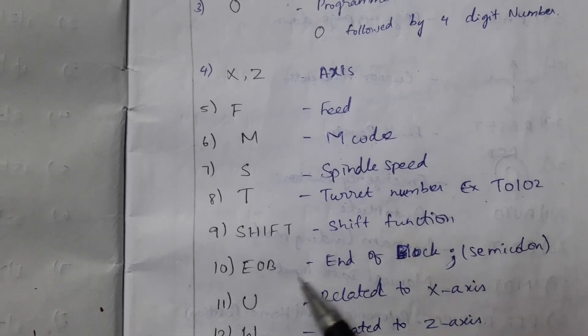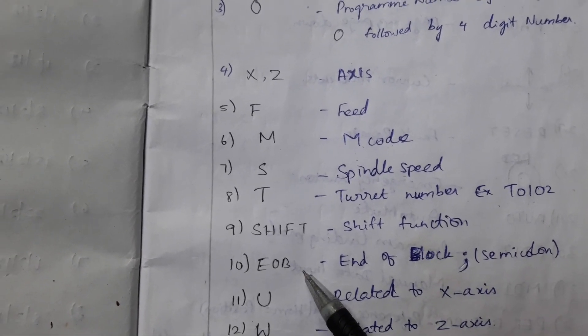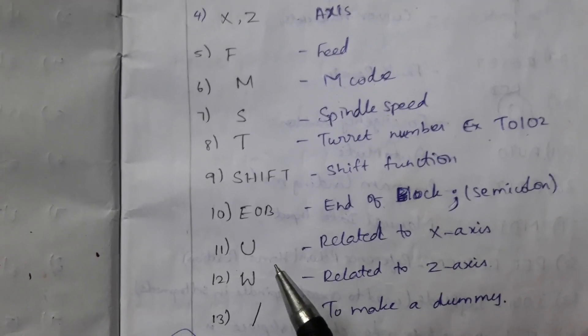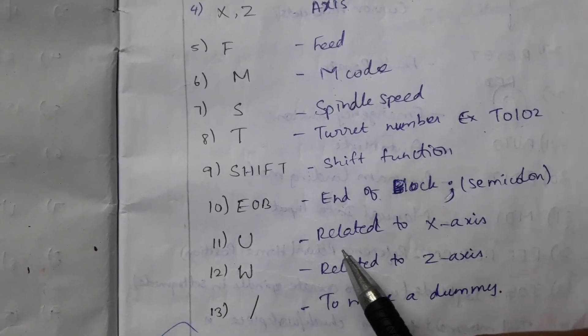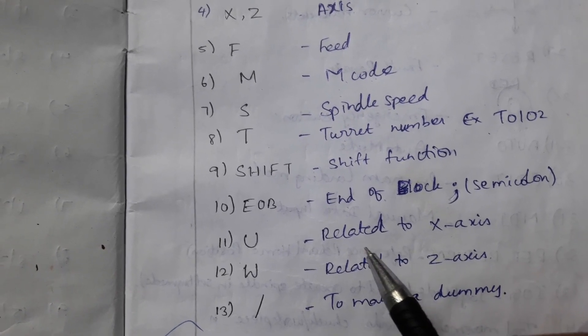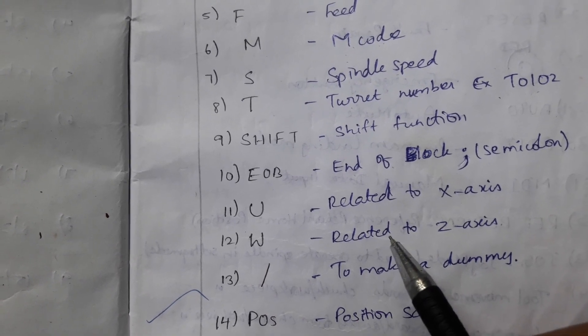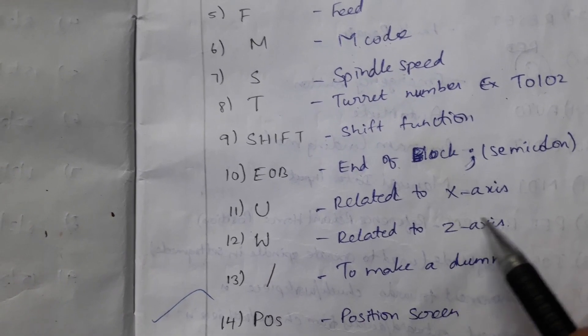U is the imaginary axis related to X axis. W is the imaginary axis related to Z axis.